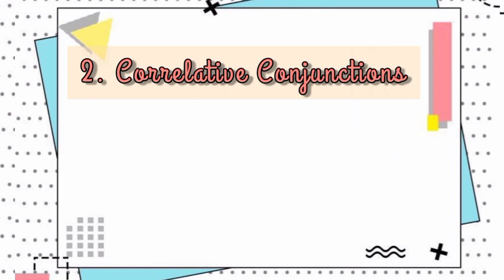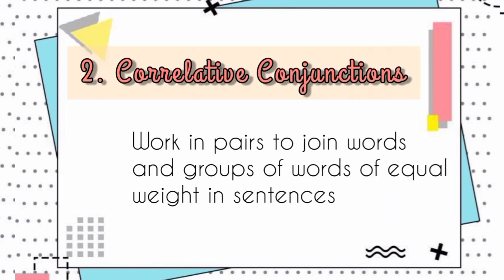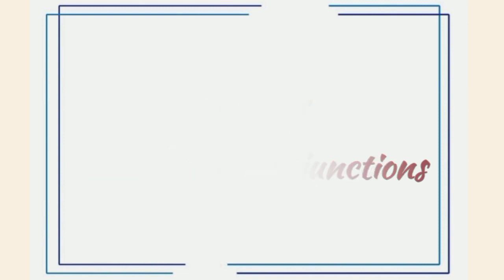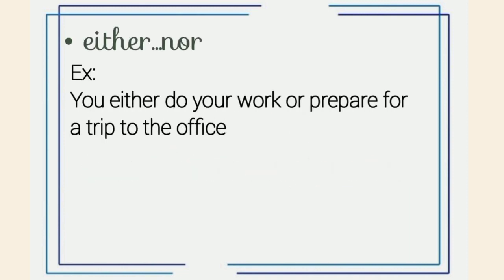Second, correlative conjunctions work in pairs to join words and groups of words of equal weight in a sentence. The pairs of correlative conjunctions such as either...nor. For example, you either do your work or prepare for a trip to the office.